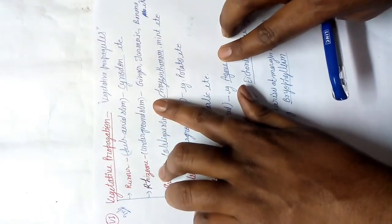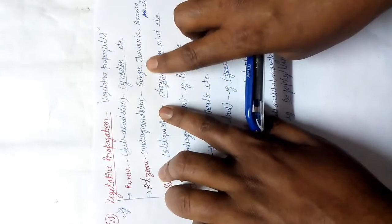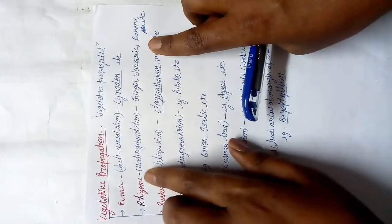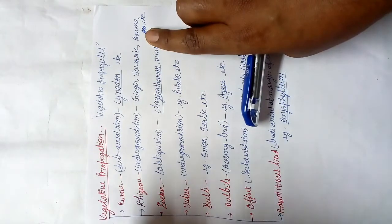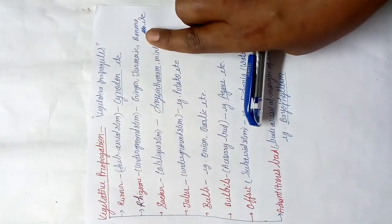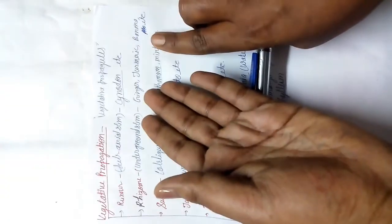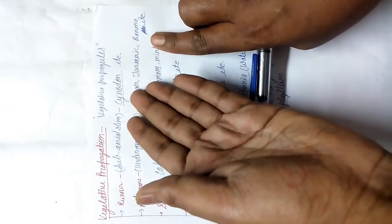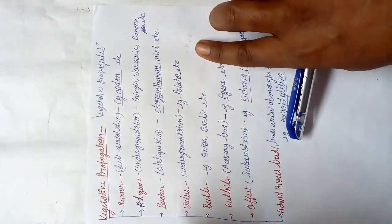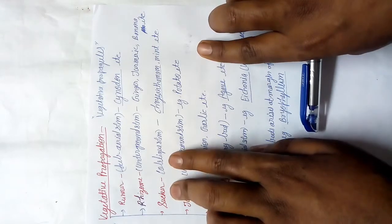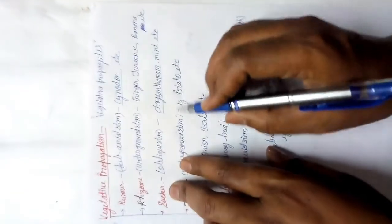Rhizome is an underground stem. Examples are ginger, turmeric, and banana. These have nodes. If you bring ginger home, after three or four days in the rainy season or winter, you can see nodes coming on the surface of the ginger and turmeric.